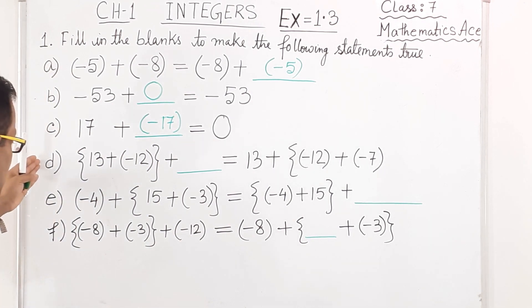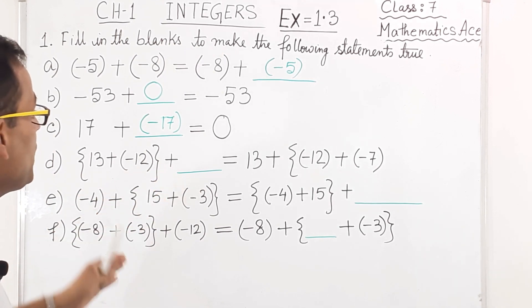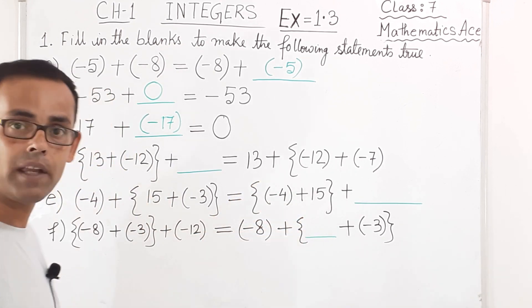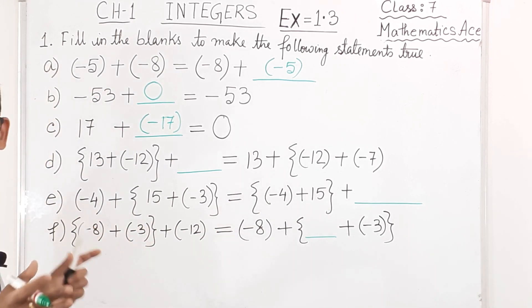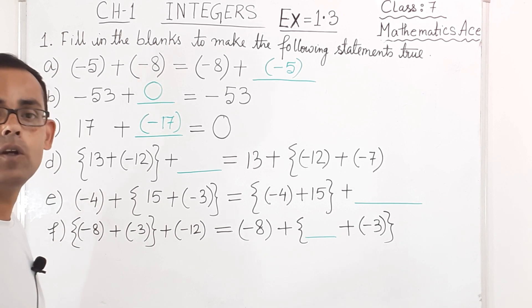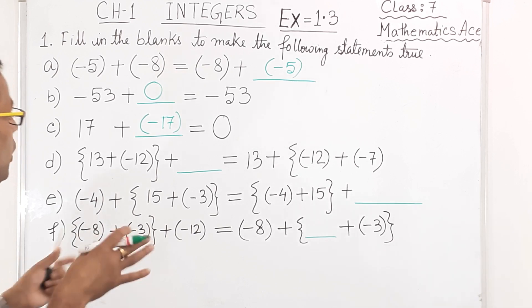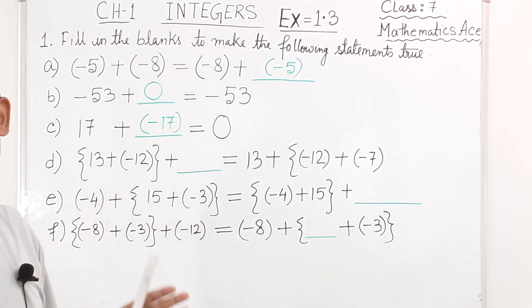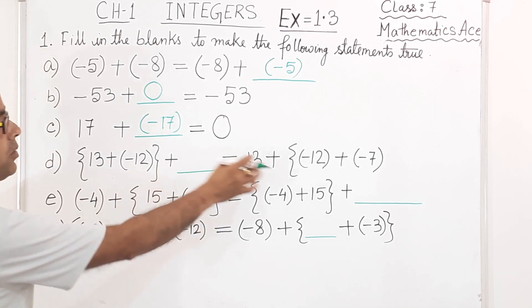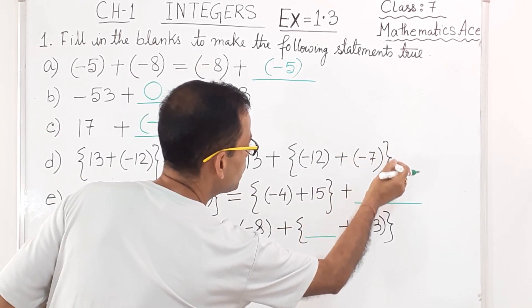Now if you see questions D, E, F, you can see all plus signs — so these are properties of addition. Which property? The associative property of addition. It tells us that when three or more integers are added, whatever the order, the outcome will be the same. So here we have three numbers X, Y, Z and we need to identify the missing values by matching the groups.